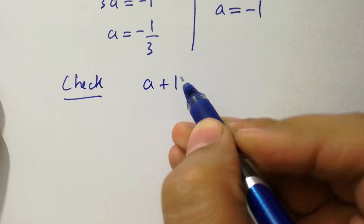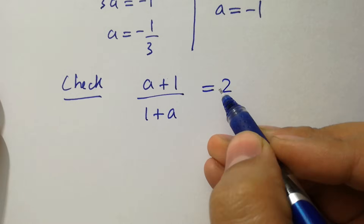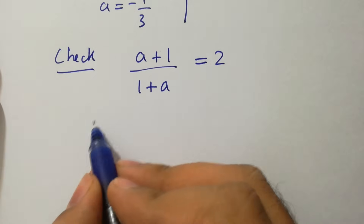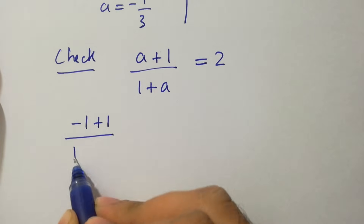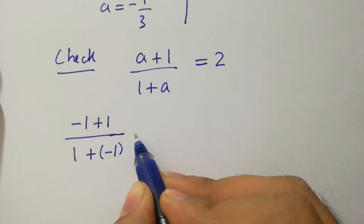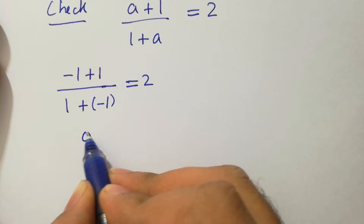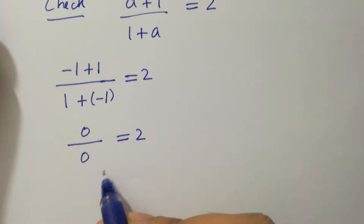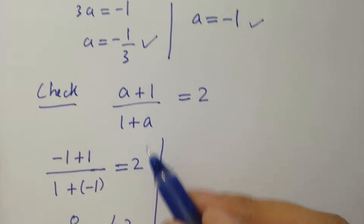Now let's check. The question is: is (a+1)/(1+a) = 2? Put the value a = -1: we get (-1+1)/(1+(-1)) = 0/0, which does not equal 2. So a = -1 is not valid.